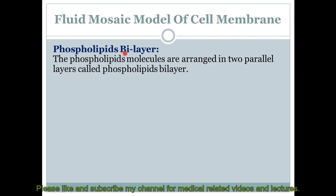Here you can see bi means two layers, this means two. So here the phospholipids molecules are arranged in two parallel layers. They are parallel in everything - their length, thickness, width, everything is parallel.